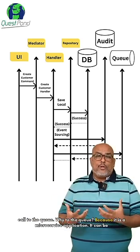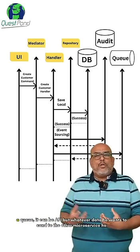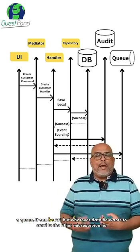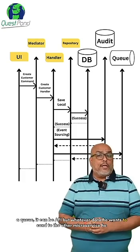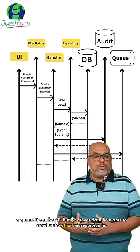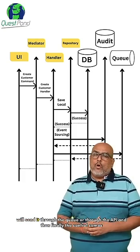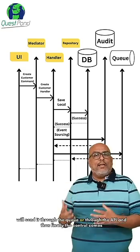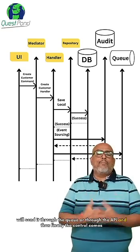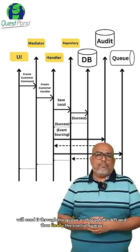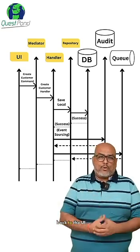Why to the queue? Because it's a microservice application. It can be a queue or even an API, but whatever data needs to be sent to the other microservice goes through the queue or the API, and then finally control comes back to the UI.